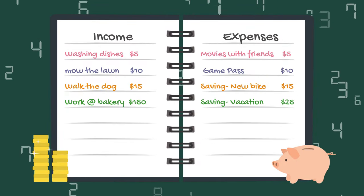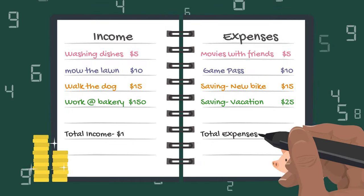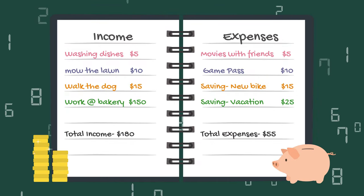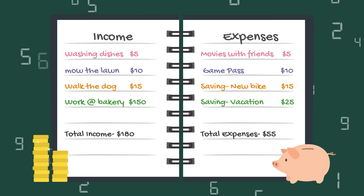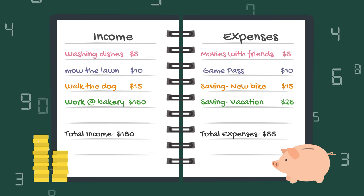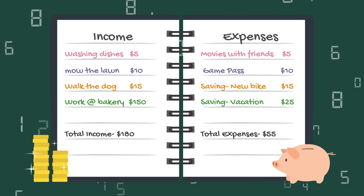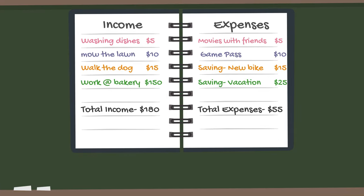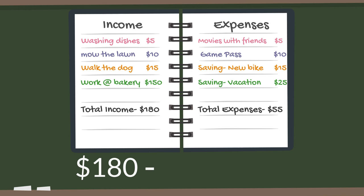Now that we have our income and expenses all figured out, we can calculate our budget. To calculate this budget, it's a very simple math problem. Take your total amount of income you earn, then subtract your total expenses you pay each month, and that is going to equal your budget.